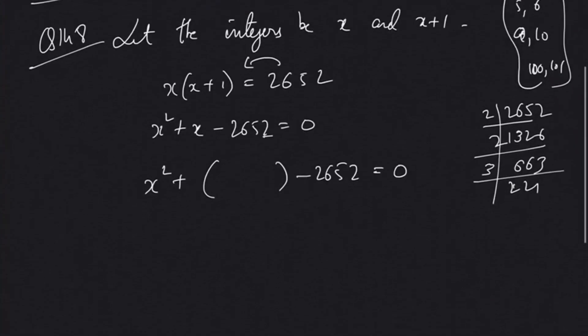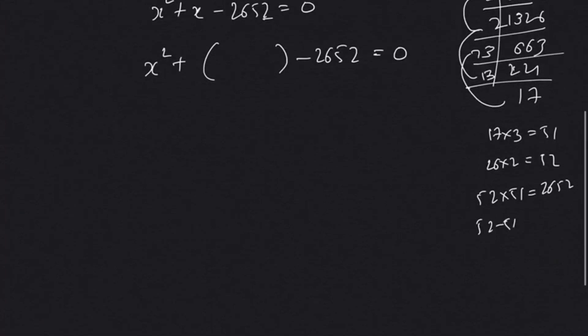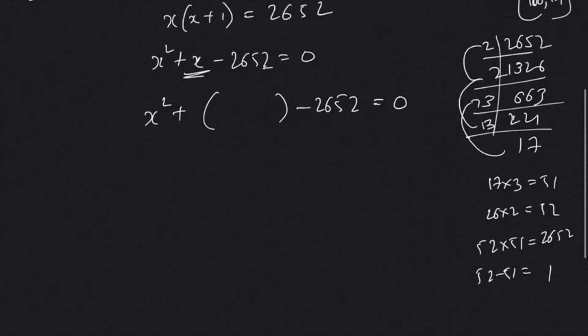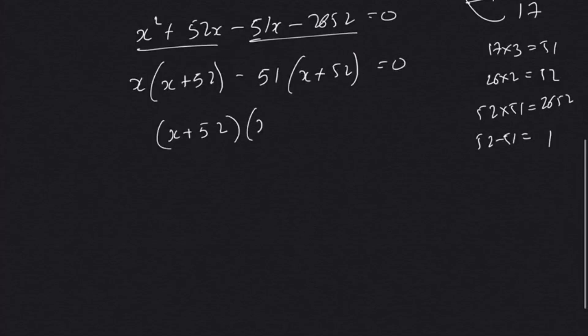Let's factorize: 2, 2, 1, 3, 13, 17. So 17 into 3 is 51, 13 times 2 is 26. 2 are 52, so 52 into 51 is 2652. 52 minus 51 is 1, that's our middle term. So x(x + 52) - 51(x + 52), taking x common from the first two terms and 51 common from the last two terms.